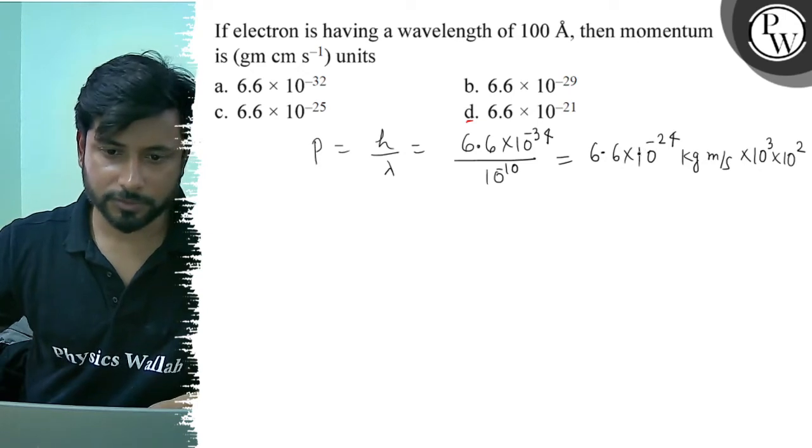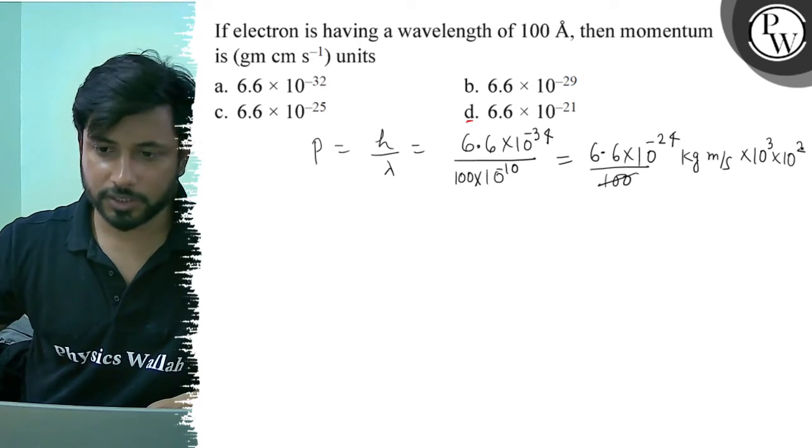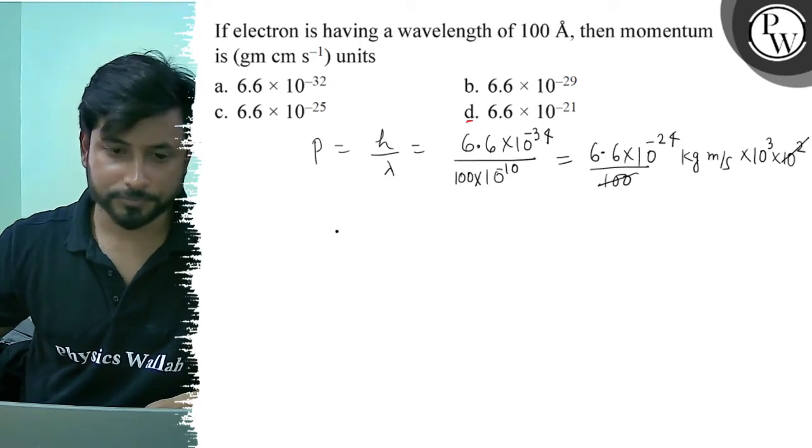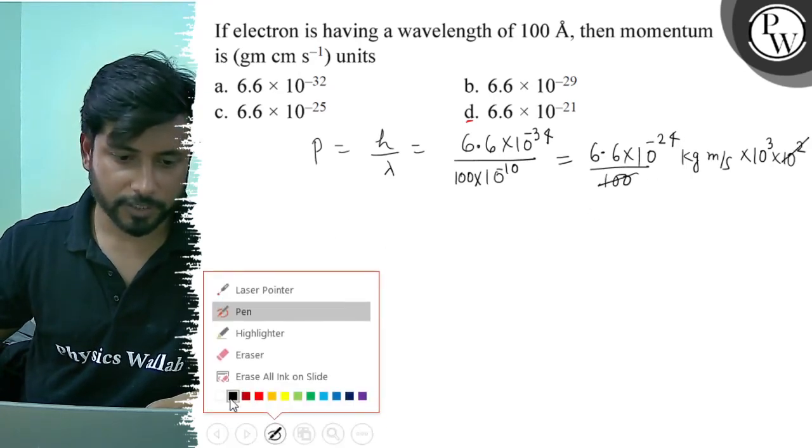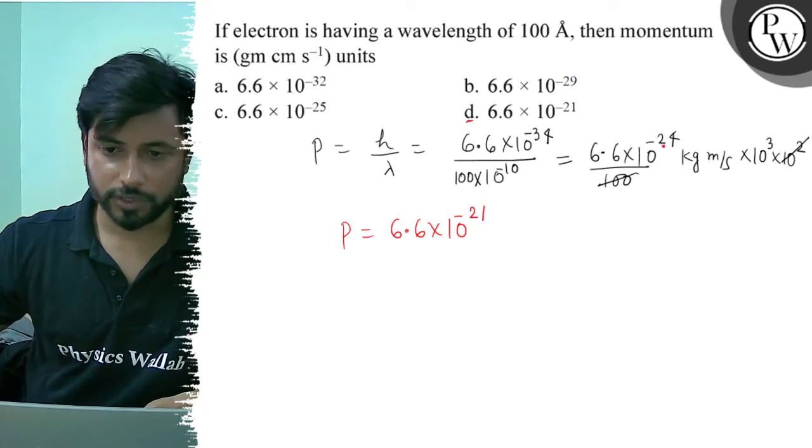6.6 × 10^-24... Sorry, this is 100. 100 × 10^-10 divided by 100. Now we will solve them. These two cancel to 10^2. So the final momentum will be 6.6 × 10^-21. It will be -24 and +3 will be -21.